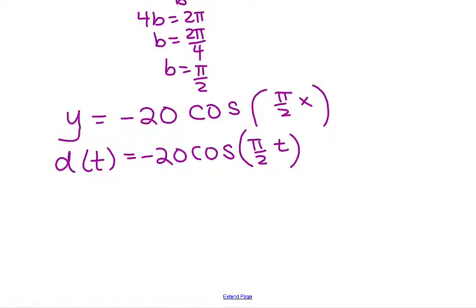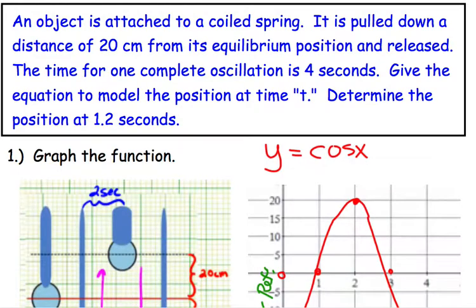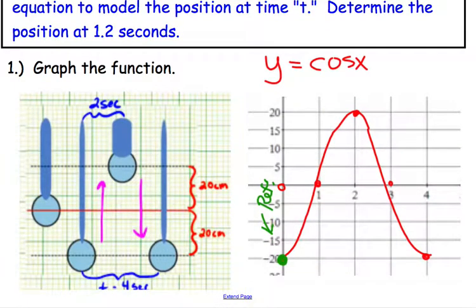The last part of the given information is they wanted us to know where on the graph would be 1.2 seconds. So we could probably estimate it, right, where it would be. So here is 1 second and here is 2 seconds. 1.2, maybe about there. Looks like maybe it's about 7, just from our graph, about 7 centimeters up. Let's check it.